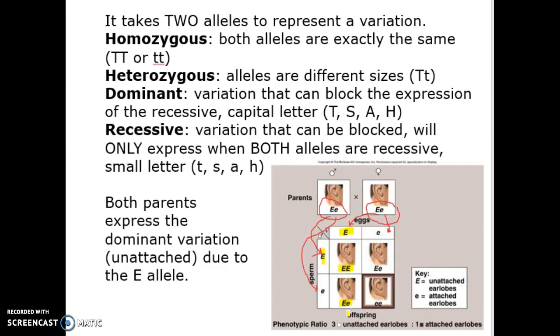If mom's big E combines with dad's little e, heterozygous individual. But physically they're still going to appear unattached. They're going to express the dominant variation even though they carry the recessive. Same thing if dad's big E and mom's little e combine. Another heterozygous individual, but they express the dominant variation. They carry, but they express dominance.